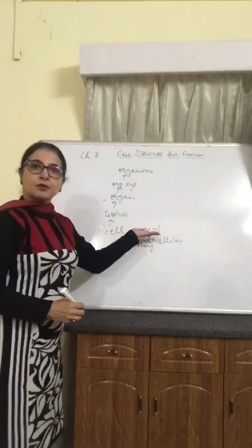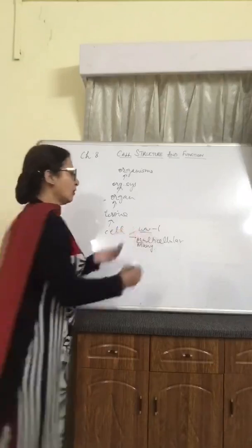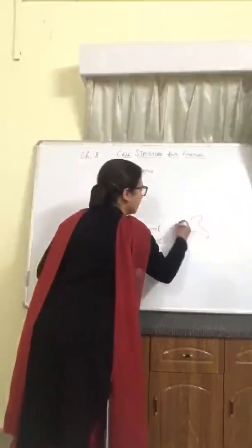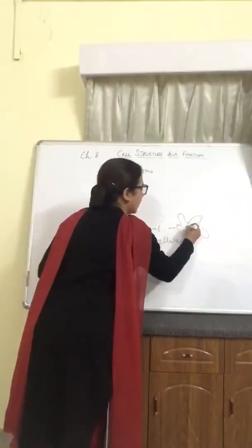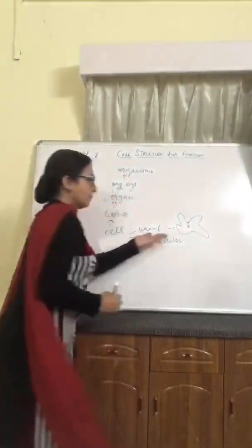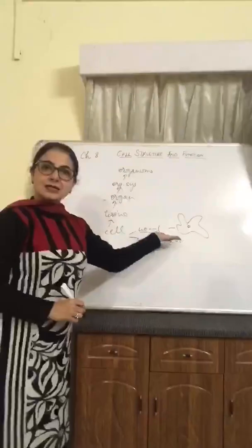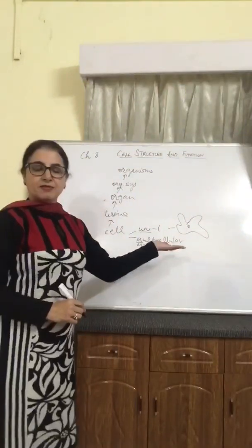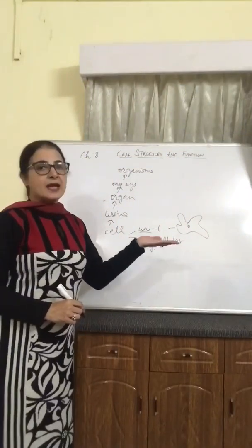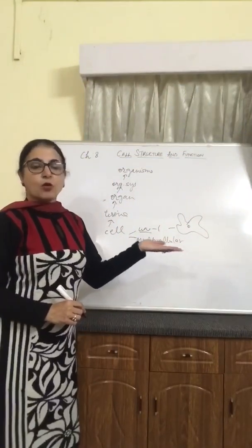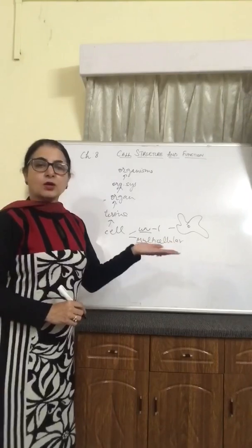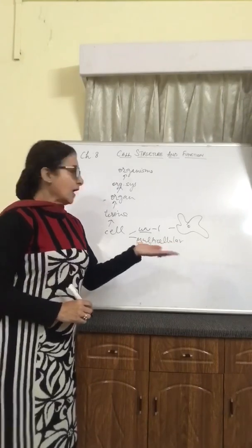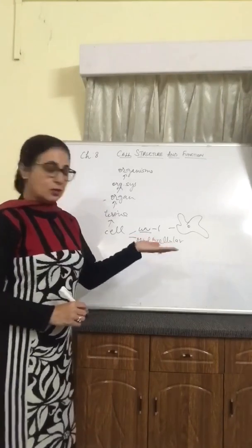A very good example of a unicellular organism is an amoeba. Although it is a single cell, it performs all life functions, which may be respiration, excretion, metabolism, or even reproduction, and responding to stimuli.